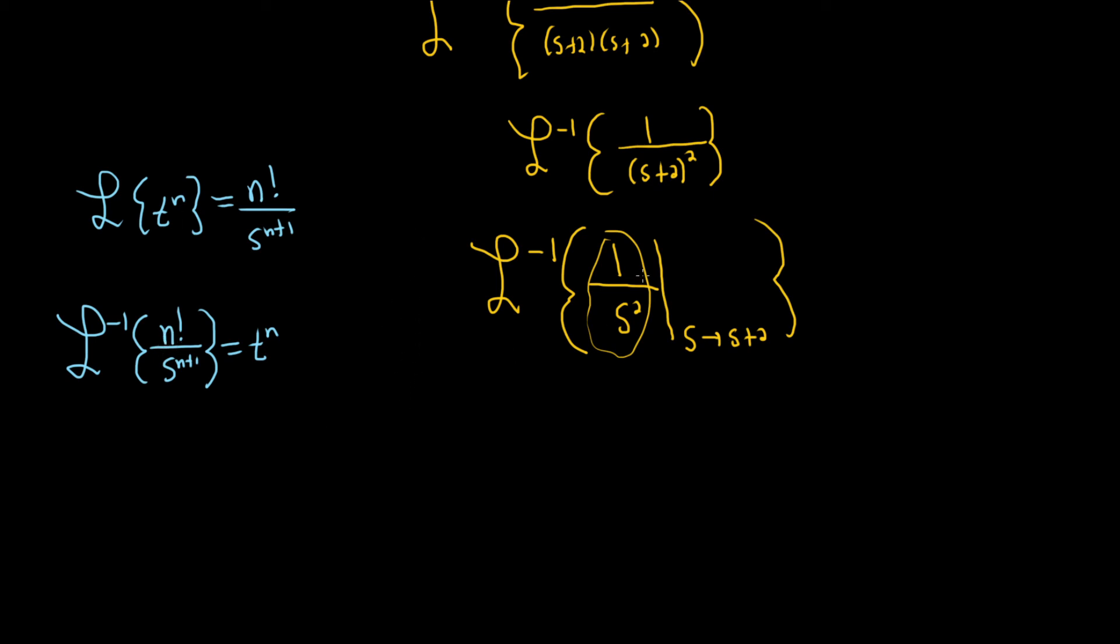Okay so here in this problem n is actually equal to 1. There's a 1 factorial here. So this will just be t and then I mentioned that the shift turns into an exponential.